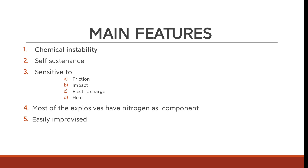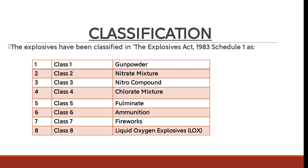Next is classification of explosives. According to the Explosive Act, explosives are classified under eight classes: Class 1 — Gunpowder; Class 2 — Nitrate mixture; Class 3 — Nitro compound; Class 4 — Chlorate mixture; Class 5 — Fulminate; Class 6 — Ammonium; Class 7 — Fireworks; and Class 8 — Liquid oxygen explosives (LOX).